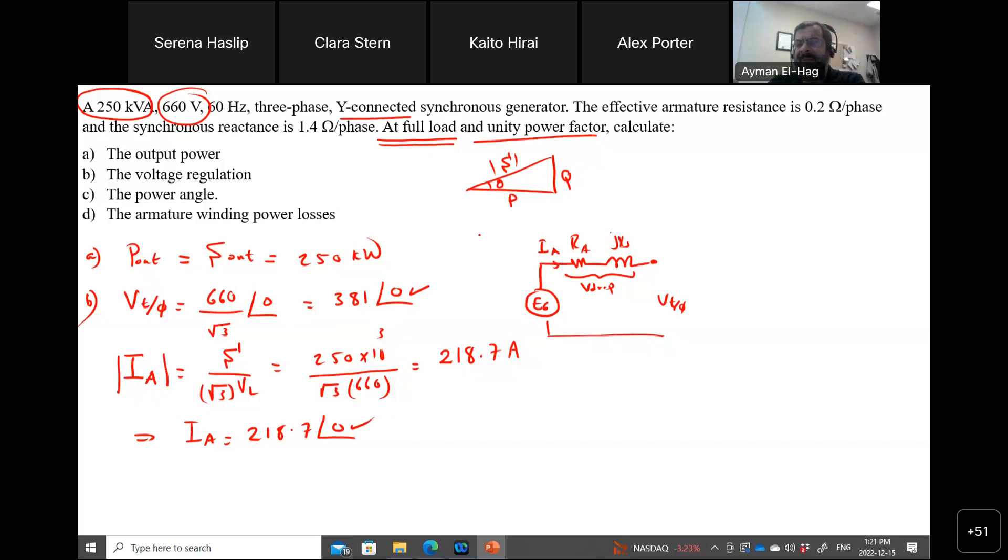Once I know I_A, a very simple KVL. So from this, your E_A will equal to your V_T per phase plus your I_A times R_A plus jX_S. We have everything here. So your E_A will equal to your terminal voltage 381 angle of 0, plus your I_A 218.7 angle of 0,